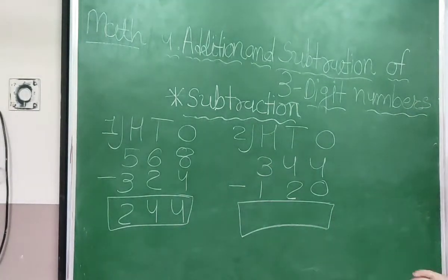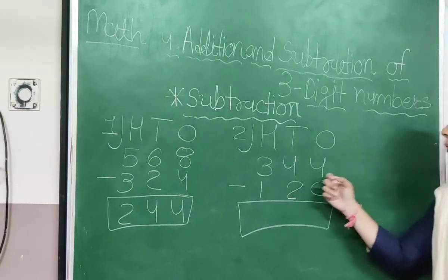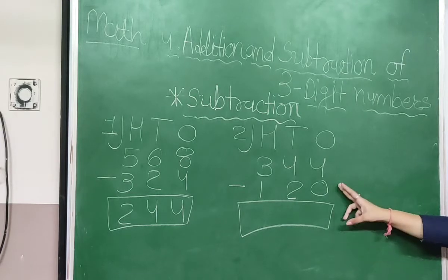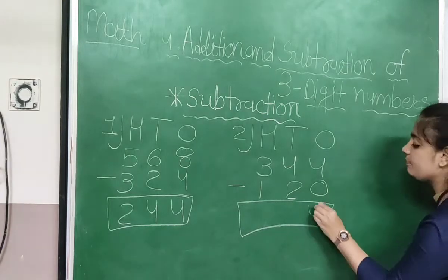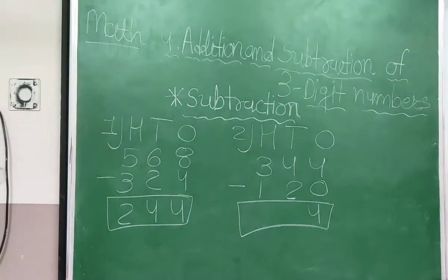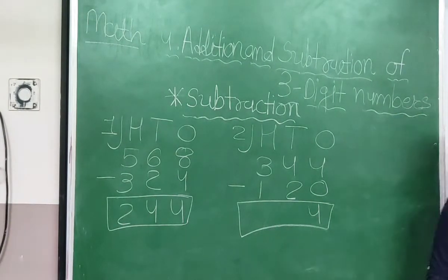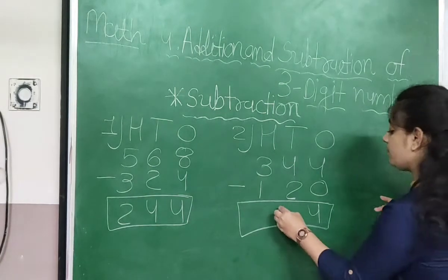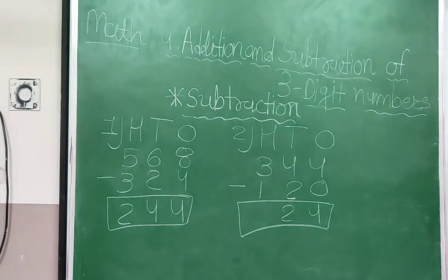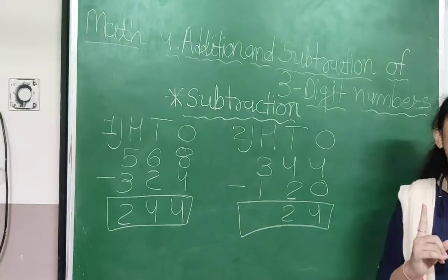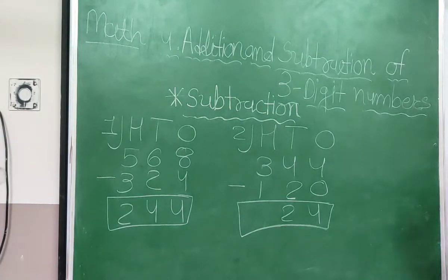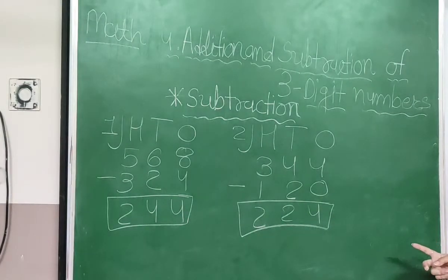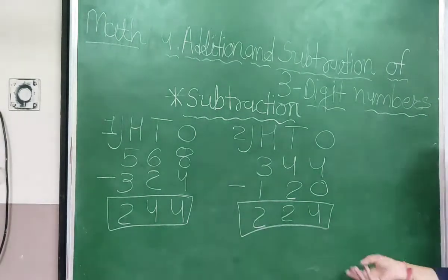344 minus 120. 4 minus 0 — count from 0 until you reach 4: 3, 4. Then 4 minus 2, the answer will be 2. And 3 minus 1 — count from 1 until you reach 3: 2, 3. So here 344 minus 120 is equal to 224.